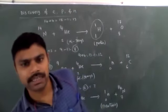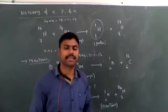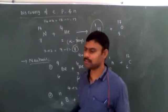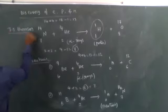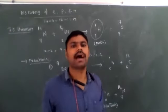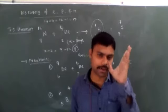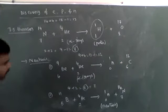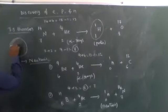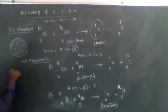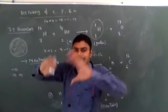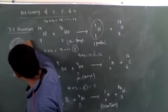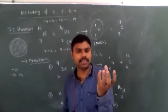Atomic models - after Dalton's atomic theory, the next is J.J. Thomson's atomic model, also known as the watermelon model or plum pudding model. He said the atom is a spherical shape with radius approximately 10⁻¹⁰ meters. The positive charge is uniformly distributed throughout, like a watermelon.